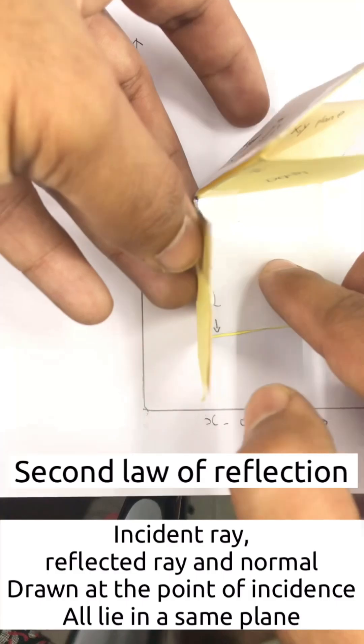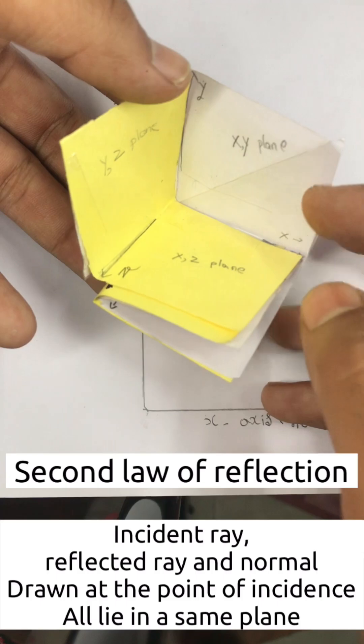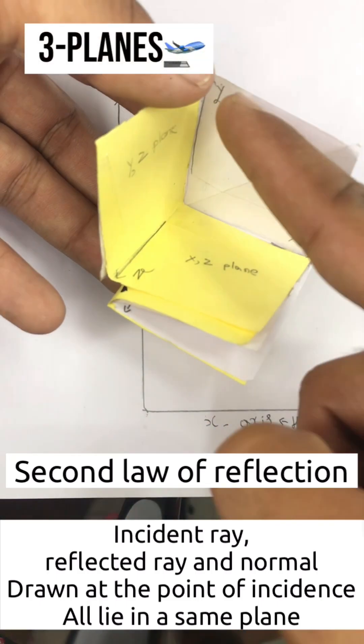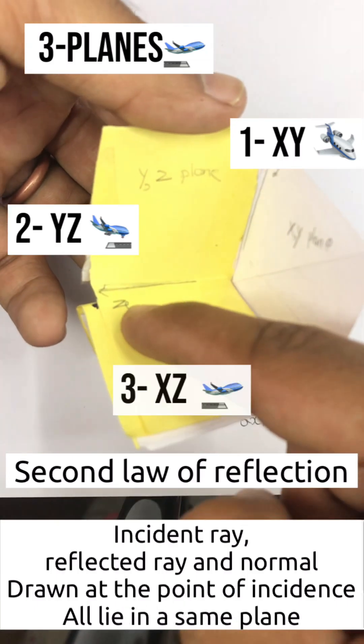If we add another z axis, then it gives depth to the plane. Therefore, now we got three planes where x-y is the first plane, y-z is the second plane and z-x is the last plane.